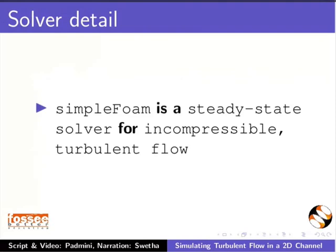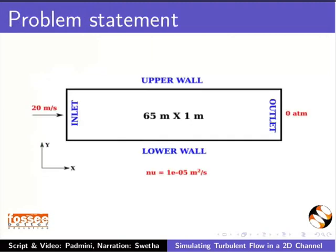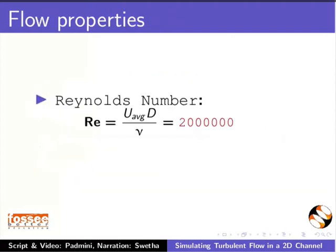SimpleFoam is a steady-state solver for incompressible turbulent flow. The diagram shows a 2D channel of length 65 meters and width 1 meter. The kinematic viscosity is 1e-5 meter square per second. The inlet velocity is 20 meters per second. Outlet pressure is set to 0 atmosphere. Reynolds number is 2 million and the flow is turbulent.